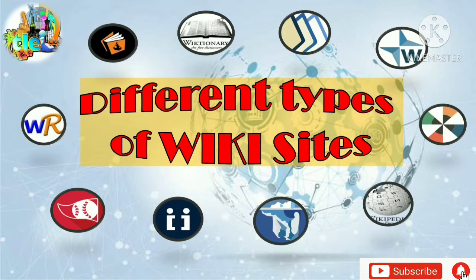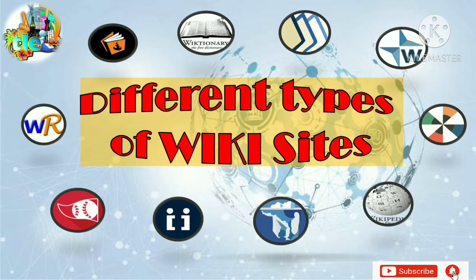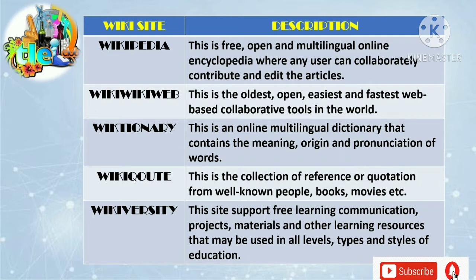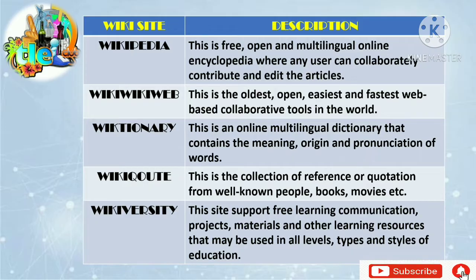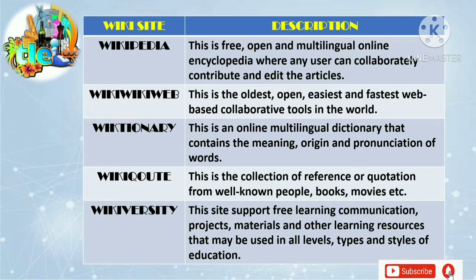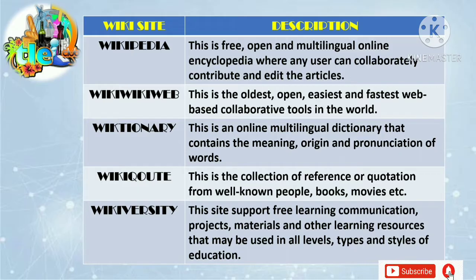There are different types of wiki websites. Here are some examples: Wikipedia — a free, open, multilingual online encyclopedia where any user can collaboratively contribute and edit articles. WikiWikiWeb — the oldest and easiest webpage collaborative tool in the world. Wiktionary — an online multilingual dictionary that contains the meaning, origin, and pronunciation of words. WikiQuote — a collection of reference quotations from well-known people, books, and movies.